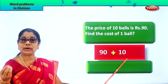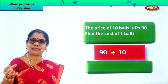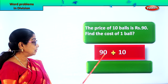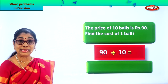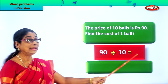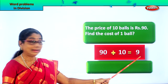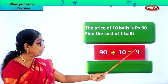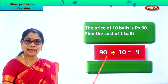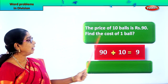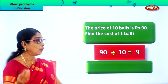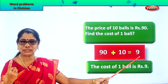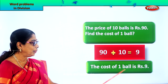Equal to what? 10 goes into 90 how many times? 10 nines are 90, so 9. 10 goes into 90 equally, so your answer is 9. You get Rs. 9 for 1 ball — 10 into 9 is 90. Find the cost of 1 ball: the cost of 1 ball is Rs. 9.